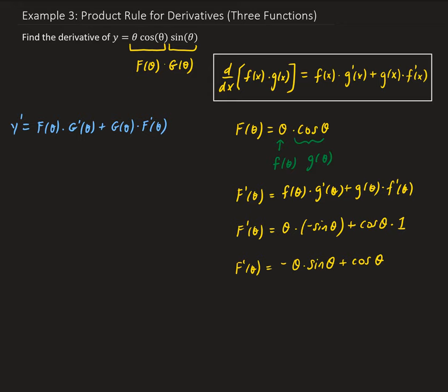Now we have F prime of θ and we need G prime of θ. G of θ is sine θ, so that means the derivative G prime of θ would be cosine θ.